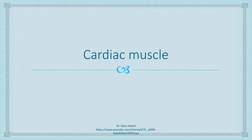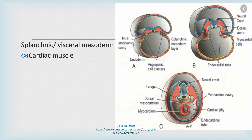Now we will briefly discuss the development of cardiac muscle. In this diagram you can see the developing heart tube. The mesoderm present just around the developing heart tube — the visceral mesoderm, also known as splanchnic mesoderm — gives rise to the cardiac muscle cells present in the myocardium of the heart.